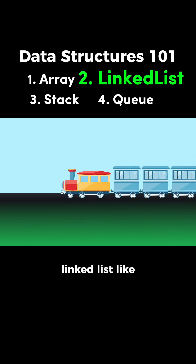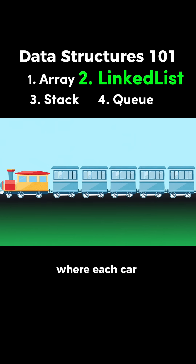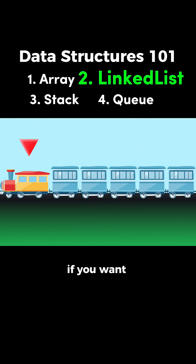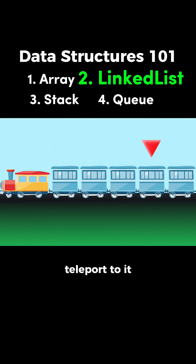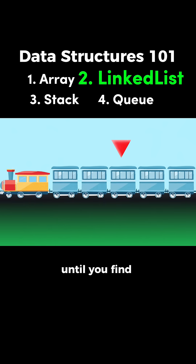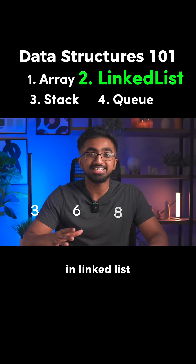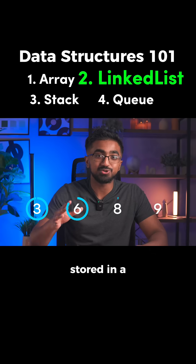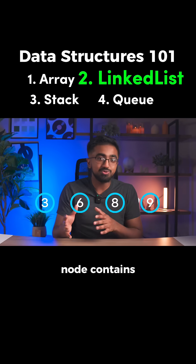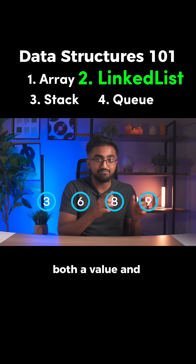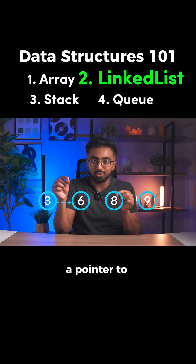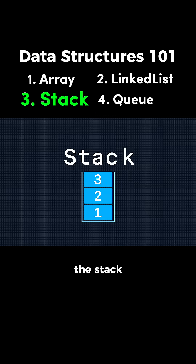Think of a linked list like a train where each car is connected to the next one. If you want to reach a specific car, you can't just teleport to it — you have to start from the front and move through each car until you find the one you need. In linked lists, each element is stored in a separate node, and each node contains both a value and a pointer to the next node in the sequence.